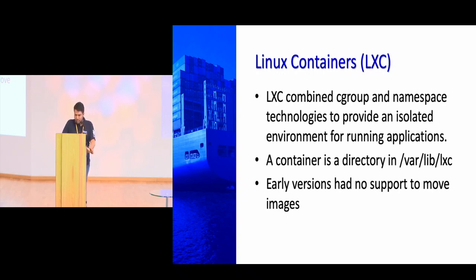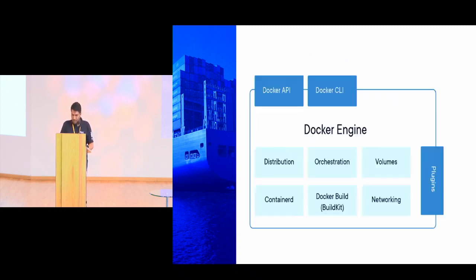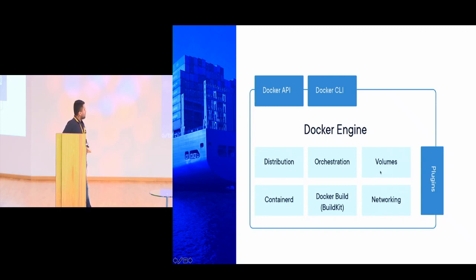The Docker engine is a client-server model that communicates using REST APIs, and it helps manage the complete container lifecycle — images, builds, execution, and those things. Components of Docker include: Docker API, Docker CLI, plugins, containerd as the runtime, Docker BuildKit for building, networking (bridge and other network plugins), volumes, volume plugins like Rex-Ray, and other components. It is a plugin-based system.